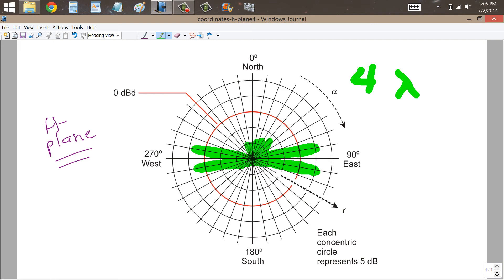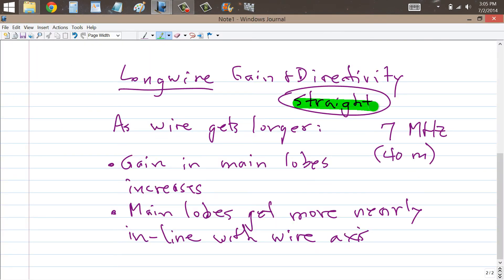But these minor lobes are nowhere near as intense as the major lobes or main lobes. So that is what happens with a long wire antenna when you make it straight. As the wire gets longer, the gain in the main lobes increases and the main lobes get more nearly in line with the wire axis.